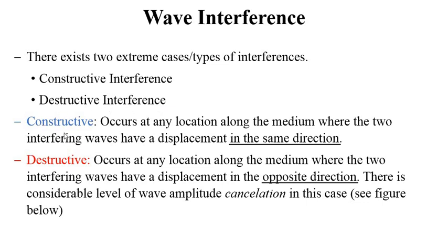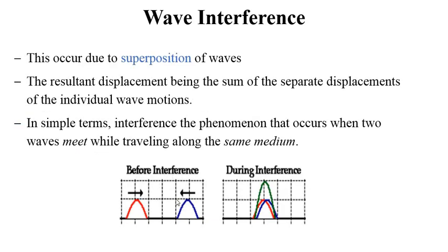In the case of constructive interference, this occurs at a location along the medium where two interfering waves have a displacement in the same direction. Like the case we just had in this other section, we have this in this direction and we also have this other one in the same direction of displacement. When this sums up, we end up with constructive interference.